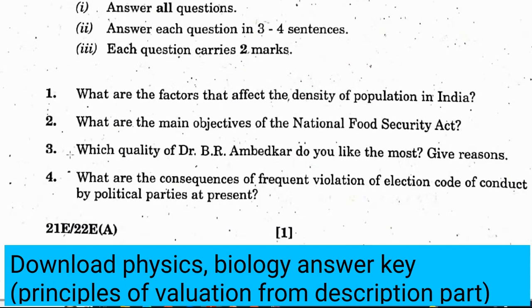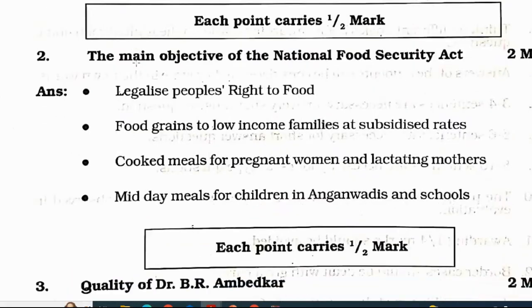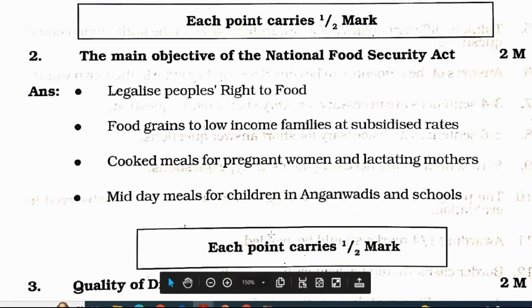Second question: what are the main objectives of the National Food Security Act? The main objectives are to legalize people's right to food, provide food grains to low income families at subsidized rates, cooked food meals for pregnant women, and midday meals for children in Anganwadi schools. Each point carries half a mark, so 4 points gives 2 marks.